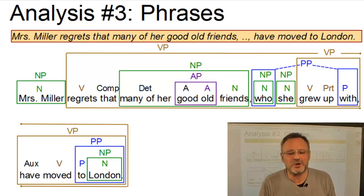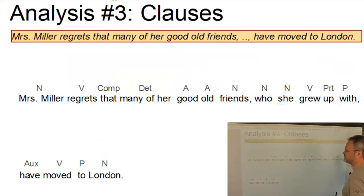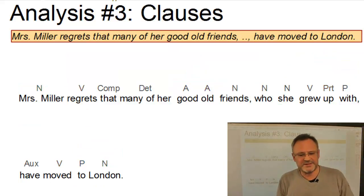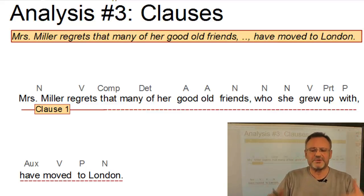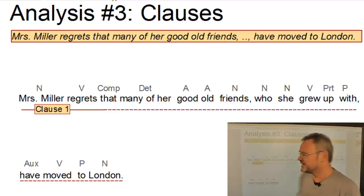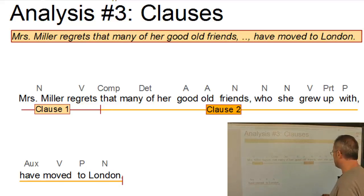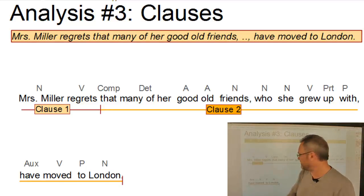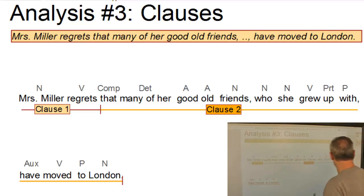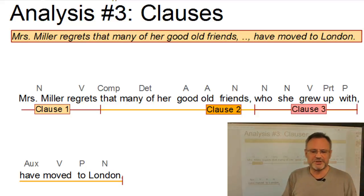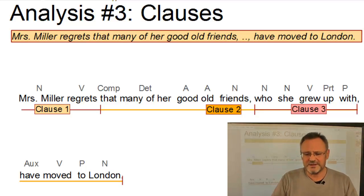Let us now analyze the clausal structure of our sentence. The sentence has one main clause, which is Mrs Miller regrets something, where something — that is the object of this main clause — is realized by an object that-clause: she regrets that many of her good old friends who she grew up with have moved to London. And within this subordinate object that-clause, we have a second subordinate clause, namely who she grew up with — a relative clause.